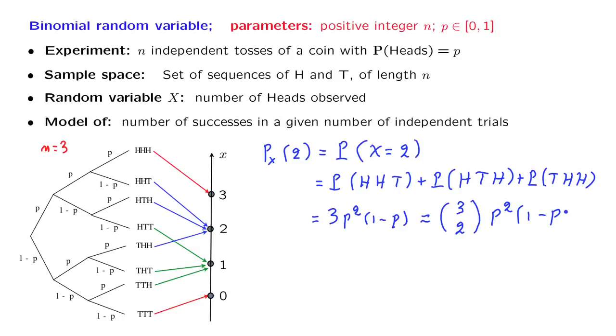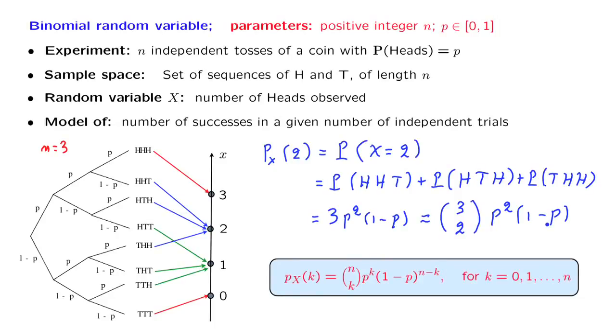More generally, we have the familiar binomial formula. So this is a formula that you have already seen. It's the probability of obtaining k successes in a sequence of n independent trials. The only thing that is new is that instead of using the traditional probability notation, now we're using PMF notation.